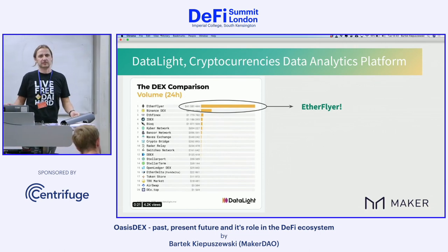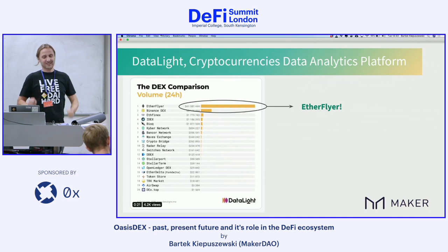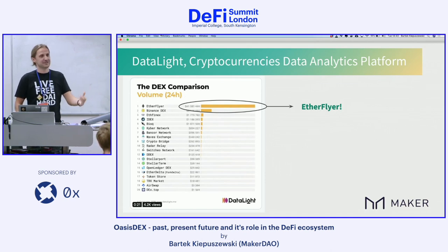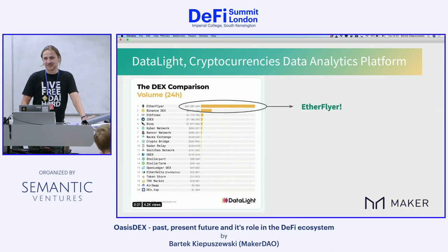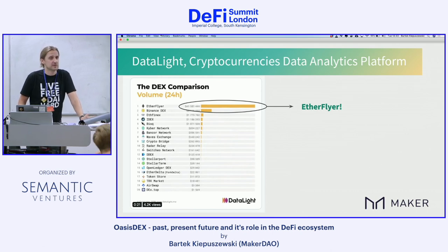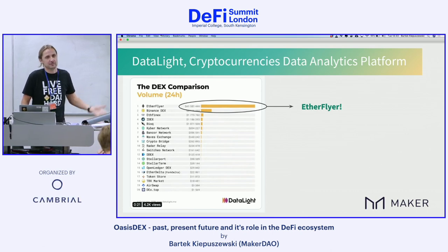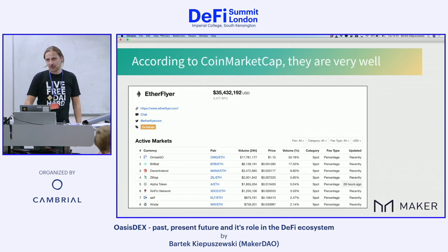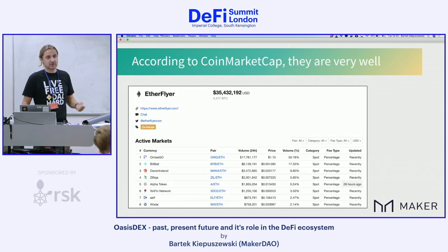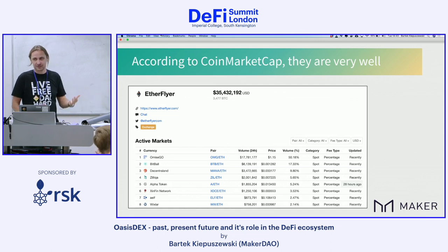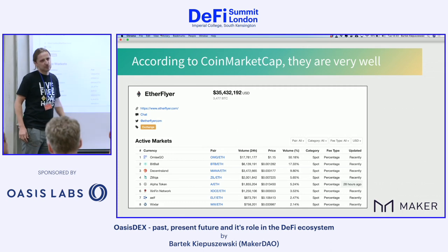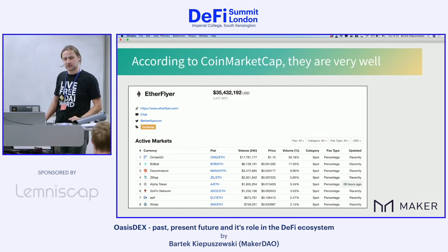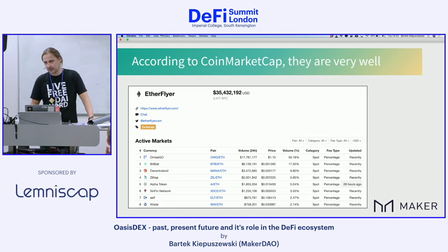I had not heard of EtherFlyer before. I checked CoinMarketCap — they seem to be legit, and the numbers are huge: 24-hour volume is $70 million in OMG tokens. So I went to the EtherFlyer web page and learned some things about smart contracts I didn't know before. They claim that using 'latest technologies with hardware acceleration and memory matching technology,' you can increase transaction speeds to hundreds or thousands of times that of centralized exchanges. That's weird — decentralized is not known for speed.